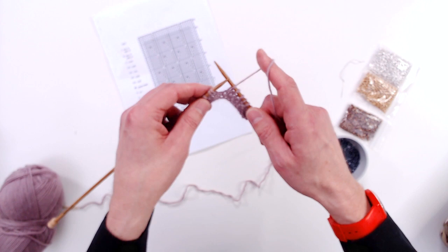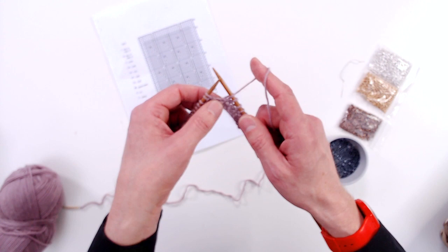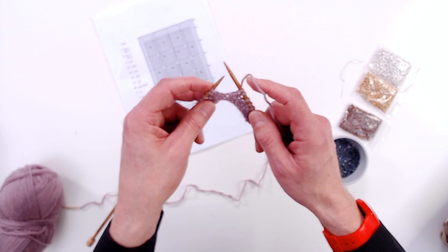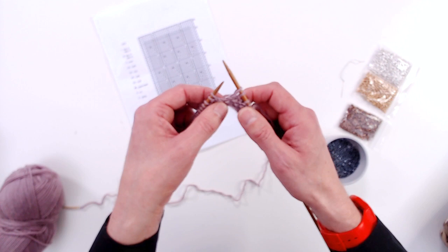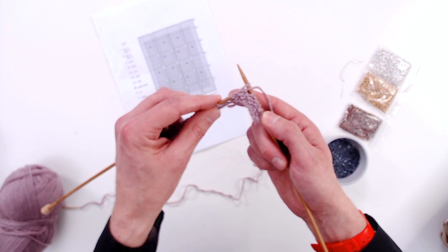In this tutorial I'm going to show you how to work the abbreviation M1 or make one. To do this, I'm going to make a stitch in between my stitch on my right hand needle and my left hand needle, and to do this I just need to pick